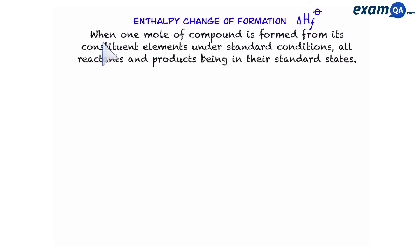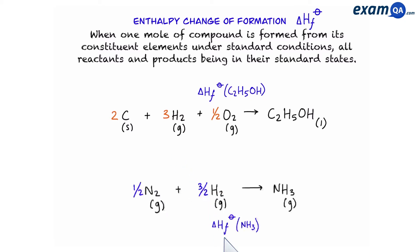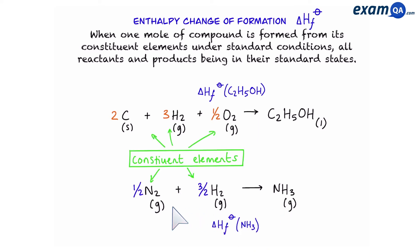The next definition is for enthalpy change of formation, ΔH°f. The definition is: when one mole of a compound is formed from its constituent elements under standard conditions, and all reactants and products are in their standard states. For example, the enthalpy of formation of ethanol has one mole of ethanol on the right and the constituent elements — carbon (solid), hydrogen and oxygen (gas) — on the left. Similarly, the enthalpy of formation of ammonia forms one mole of ammonia from its constituent elements.